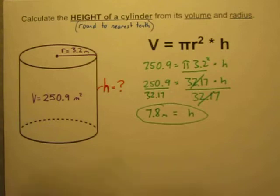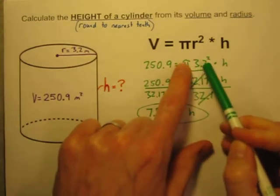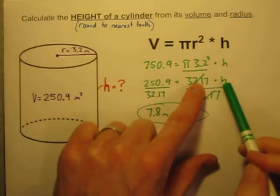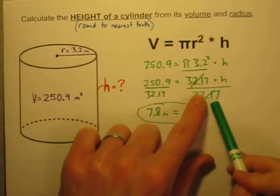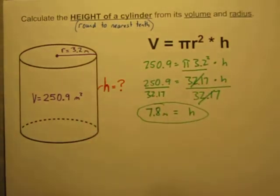So that seems to work the best. If you take these numbers that you know, you multiply them together. And then to get h by itself, you just divide by that number. Divide both sides, you'll get your height.